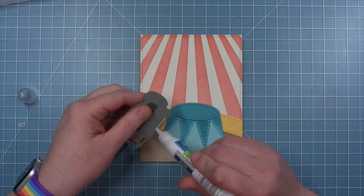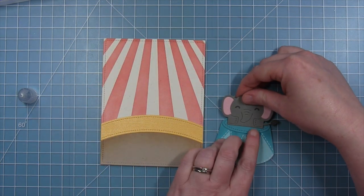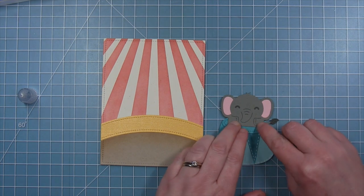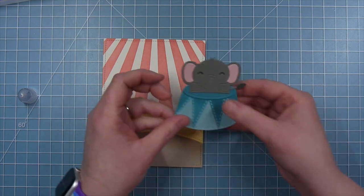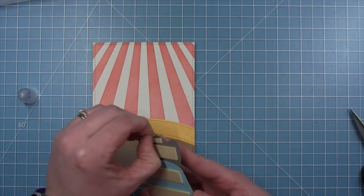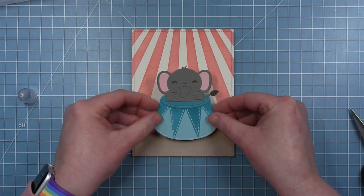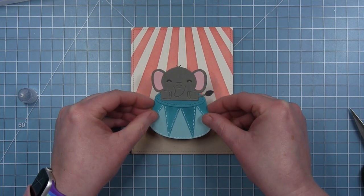I'm adding my background panel to a card base before I start to assemble all my elements onto this card. And then I can add my little elephant to the top of my elephant stand. He fits perfectly right on that stitched oval that's the top. And then I'm going to add foam adhesive all over the back of the stand and elephant and place him in the center of my circus ring.